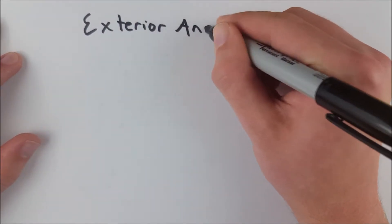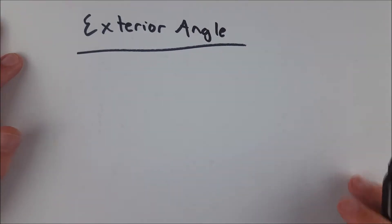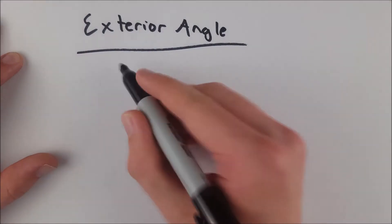What is an exterior angle? We talk about them a lot with triangles, but every polygon has exterior angles, and this is what they are.